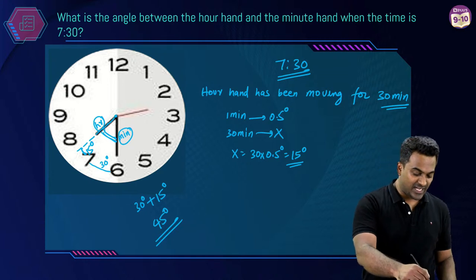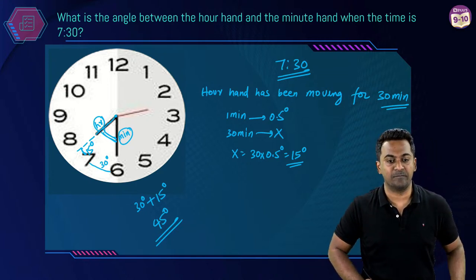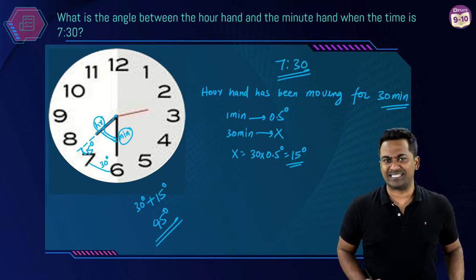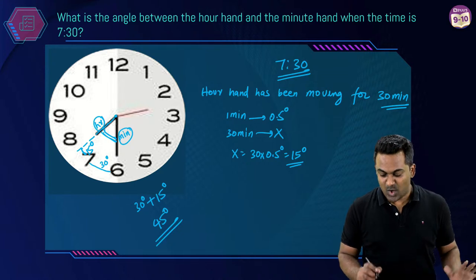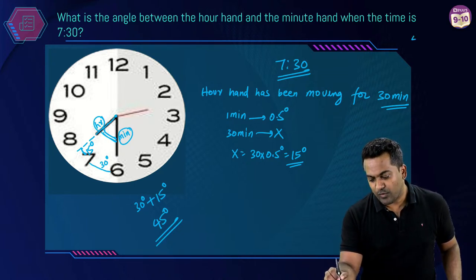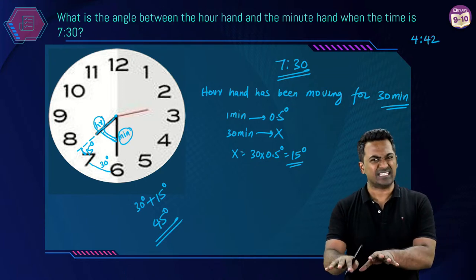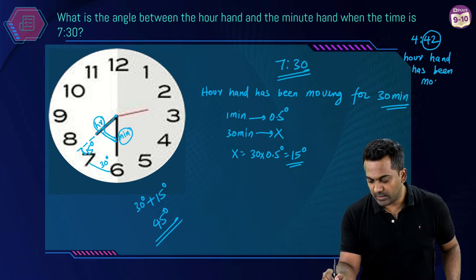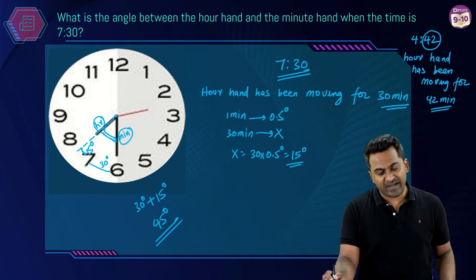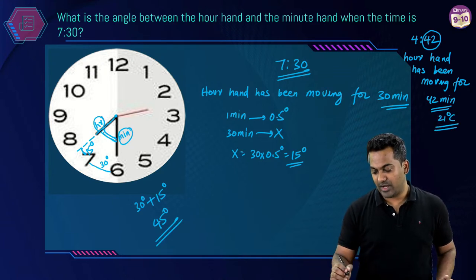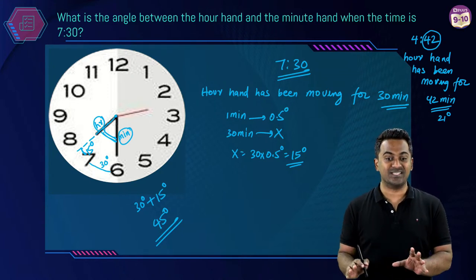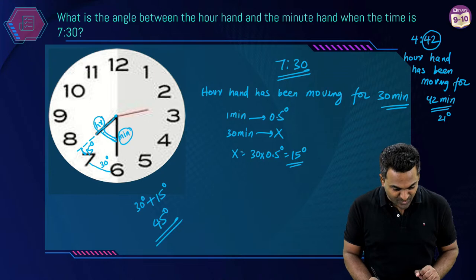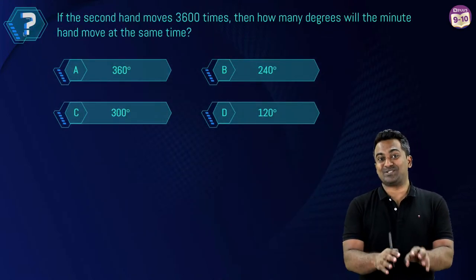So the small angle beyond 7 toward 8 is 15 degrees. Add it up: 30 + 15 = 45 degrees. Well done — 45 degrees is correct! If you want the reflex angle, subtract from 360: 360 − 45 = 315 degrees. If the time were 4:42, the hour hand has moved 42 minutes, so it covers 42 × 0.5 = 21 degrees.